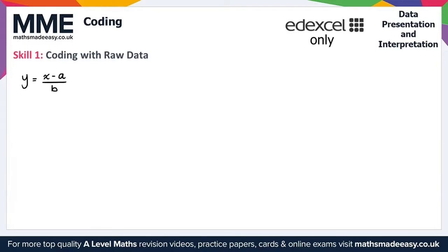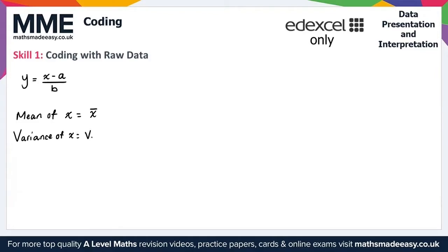Let's recall some notation. The mean of x uses the notation x-bar — an x with a little bar above it. For the variance of x, we write Var(x̄) — we write 'var' and then the variable x with a bar.